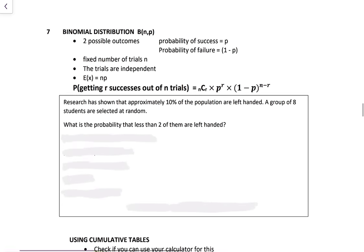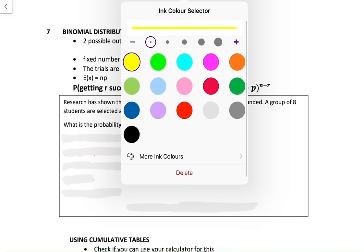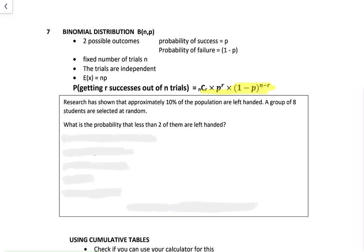Binomial distribution — 'bi' means two: two possible outcomes, usually success or failure. Probability of success is p, probability of failure is 1 − p. There are a fixed number of trials n, and trials are independent. E(X) = np. The probability of getting r successes out of n trials is n choose r × p^r × (1−p)^(n−r).